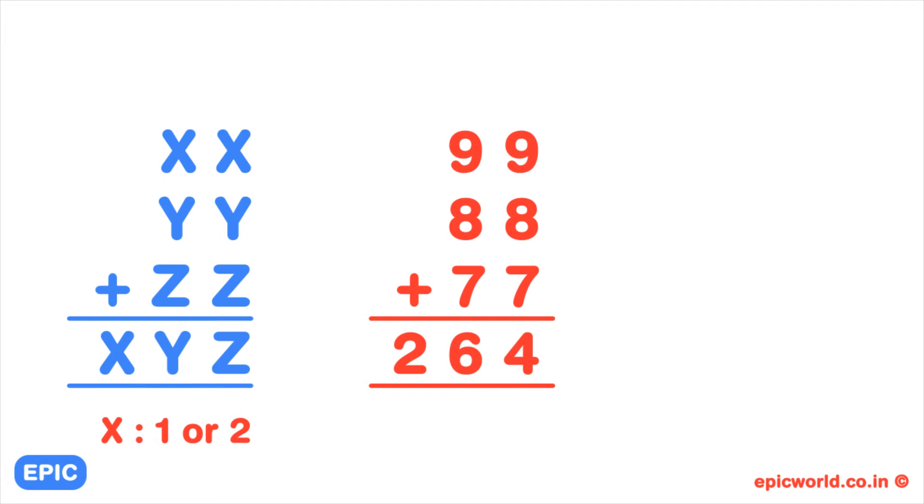Now look at the addition of the unit digits. X plus Y plus Z equals Z. Since it is at the unit's place, there is no carryover to add. So X plus Y has to be 10.